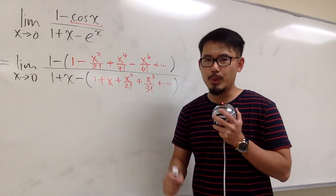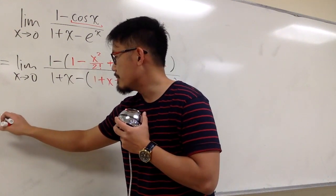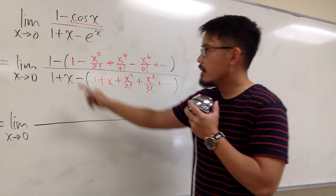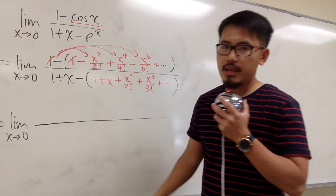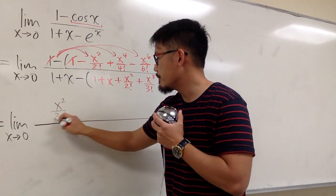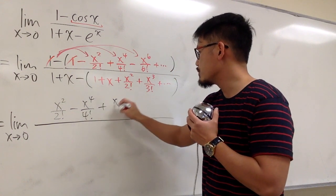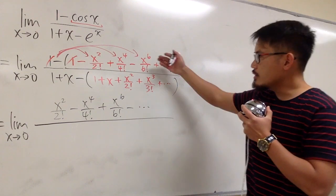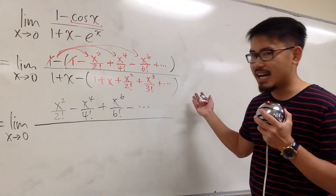Now on the numerator, we can see 1 minus 1 cancels out. Be sure to distribute the negative into the parentheses. We end up with plus x squared over 2 factorial, then minus x to the 4 over 4 factorial, then plus x to the 6 over 6 factorial, and so on. I put down the first four terms, which should be enough — if not, more can be added.